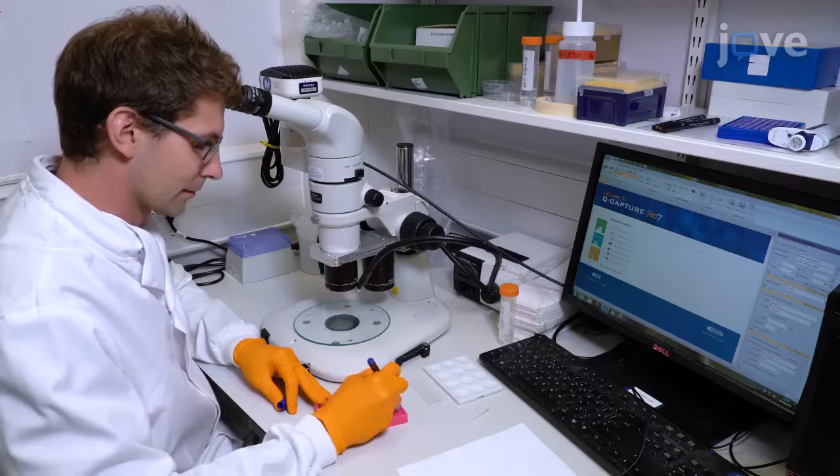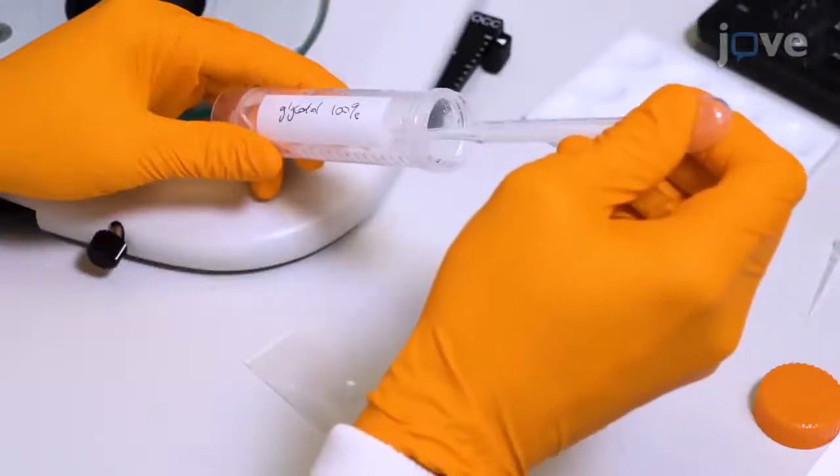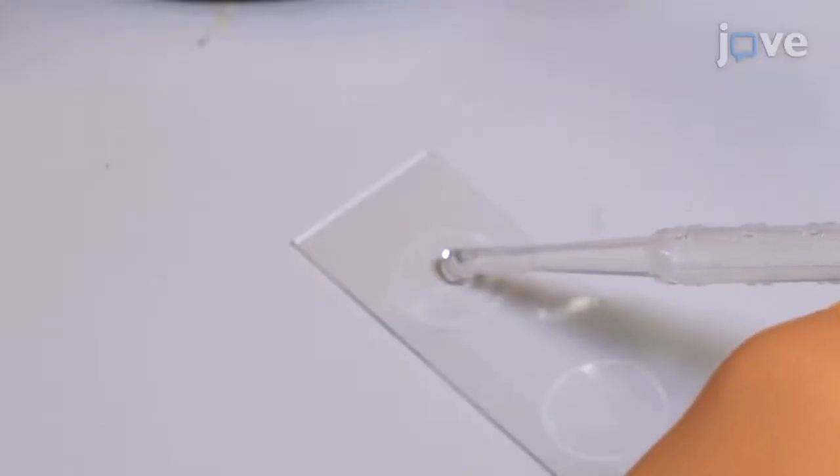Prepare and label enough PCR tubes to transfer the ISH-stained embryos after imaging. Then, use a 3 mL Pasteur pipette to add 100% glycerol to the bottom of the well of a glass depression slide.